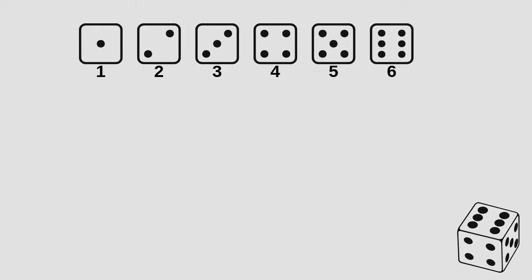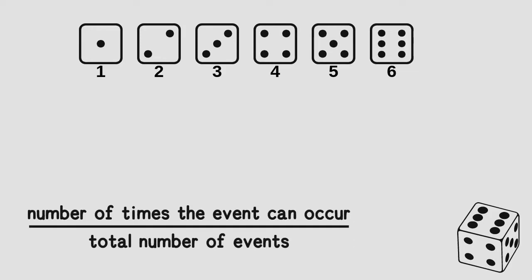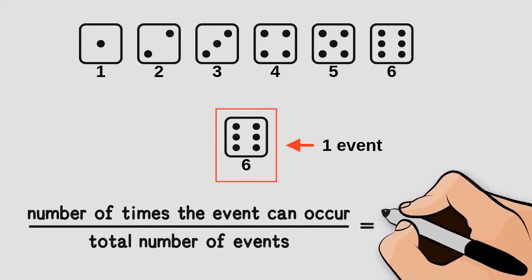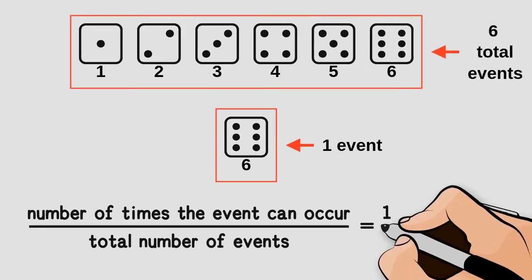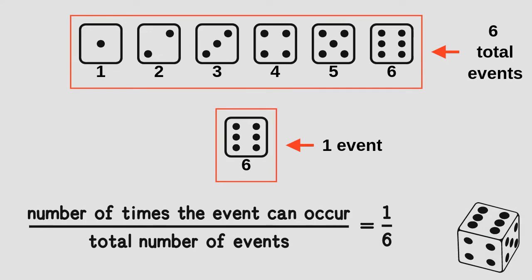We can use the same ratio or fraction to calculate the probability of rolling a six: the number of times the event can occur divided by the total number of events. The number of times the event can occur equals one, because there is only one face with a six on it. The total number of events equals six, because there are six faces altogether. That gives us one divided by six — a one in six chance of rolling a six.